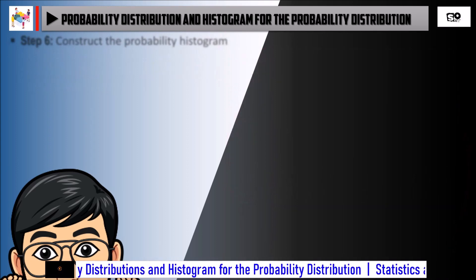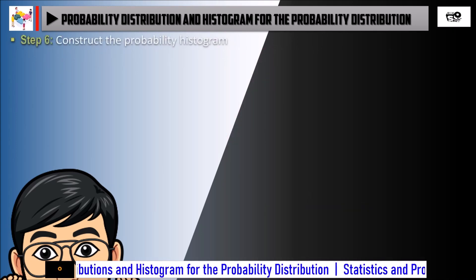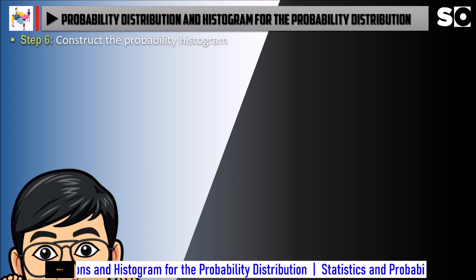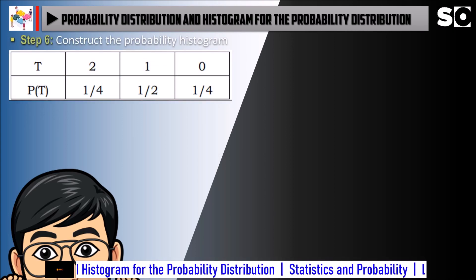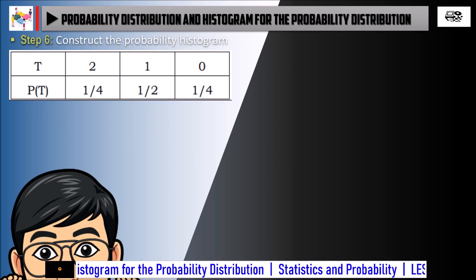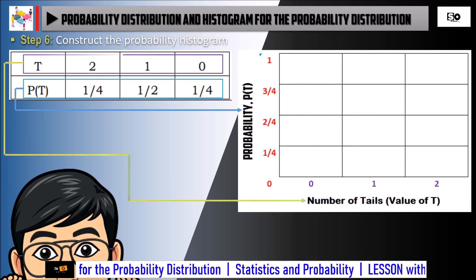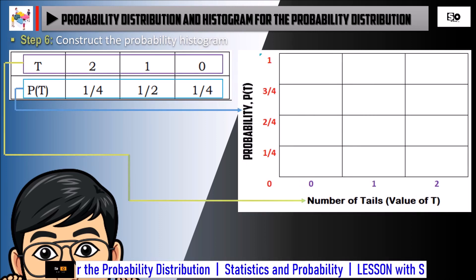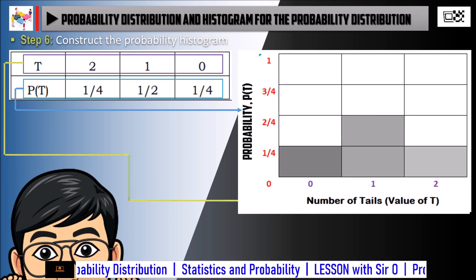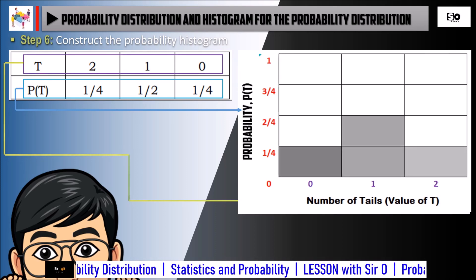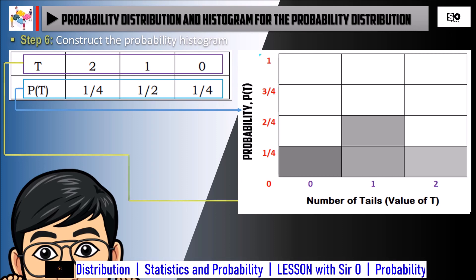Let us proceed to the last step. Step 6: Construct the Probability Histogram. We are going to use the values in Step 5 and make a bar graph to construct the probability histogram of the given example. This is now the final construction of the probability histogram.